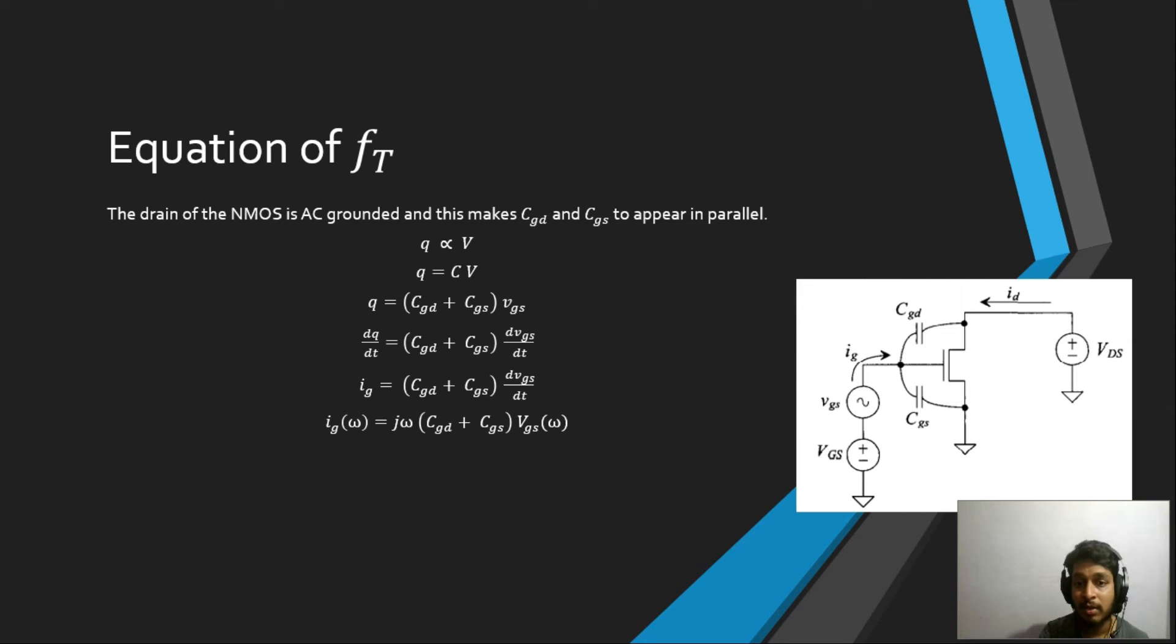Now what we want to do is we want to replace the VGS of omega, because we know that the drain current which is ID is equal to gm times VGS. This is the simple equation from Ohm's law. If we replace the VGS by ID divided by gm, you see that the VGS is nothing but ID divided by gm. And now what we will do is we will take the ratio of ID by IG of omega.